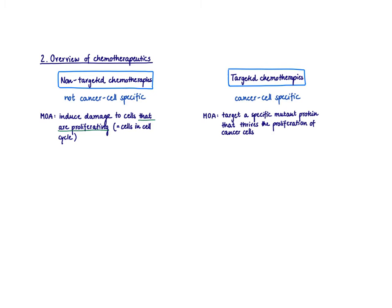In contrast, for some cancers, we know a specific mutation that drives the cell into the cell cycle. So we target the mutant protein that is responsible for why that cell is fast-proliferating. For targeted therapy, we focus on why the cell is dividing. For non-targeted therapy, we just target it because it is dividing — we don't know the reason, we just hit any fast-proliferating cell.